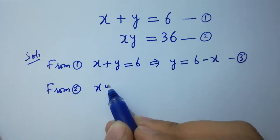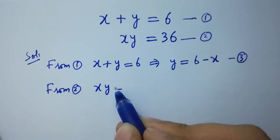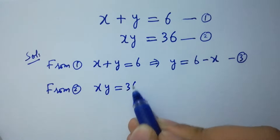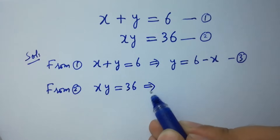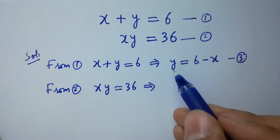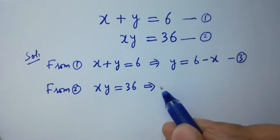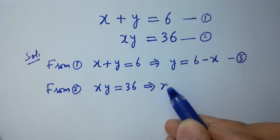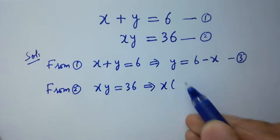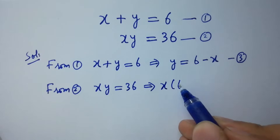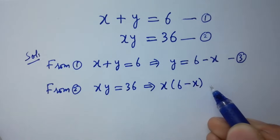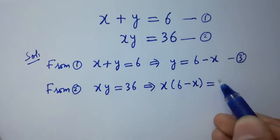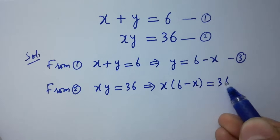From the second equation, x times y equals 36. We substitute the value of y, so x times (6 minus x) equals 36.